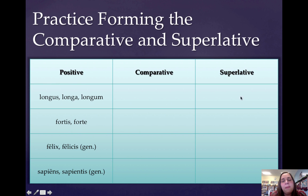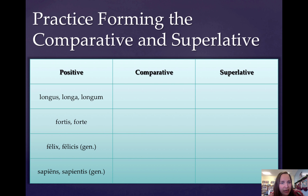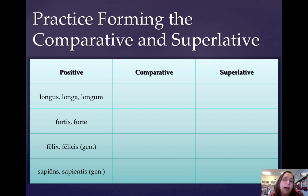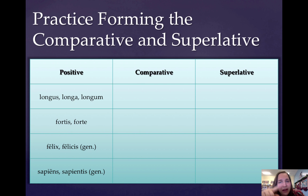I have some more examples for you, so pause the video and write out this chart of the positive, comparative, and superlative degrees. Write your examples of the positive: longus, longa, longum; fortis, forte; felix, felicis; sapiens, sapientis — get the noun base, then add the comparative and the superlative endings, and see how you do. Push pause and write this out.